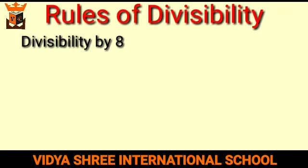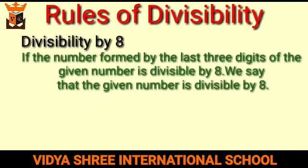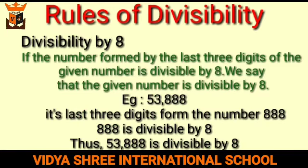Next is divisibility by 8. If the number formed by the last 3 digits of the given number is divisible by 8, we say that the given number is divisible by 8. For example, 53,888 — its last 3 digits form the number 888, which is divisible by 8. Thus 53,888 is divisible by 8.